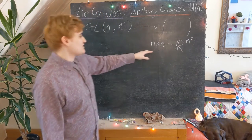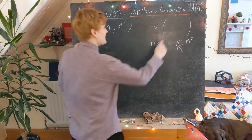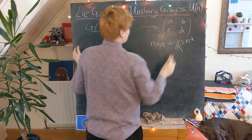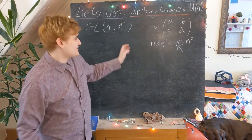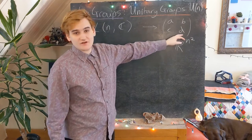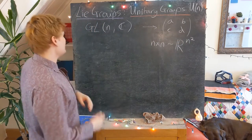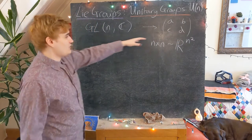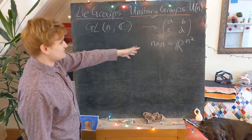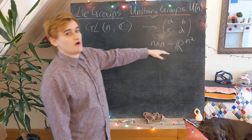For example, if we have a 2 by 2 matrix, we essentially have 4 coordinates, which are the matrix elements, and so as a manifold this 2 by 2 matrix is isomorphic to R⁴.